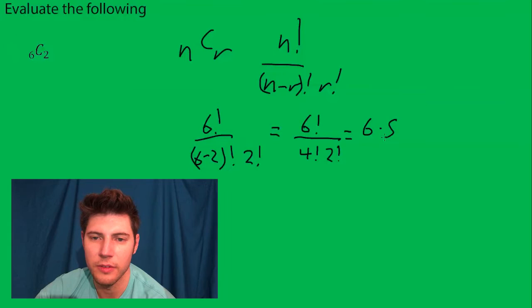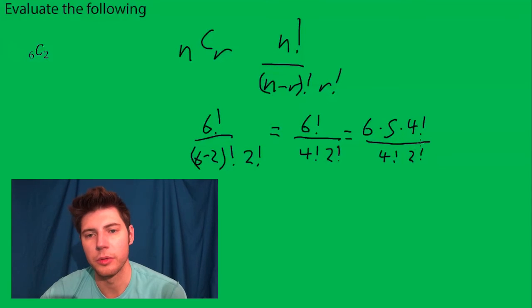Six times five times four factorial which is four times three times two times one divided by four factorial two factorial. The reason I didn't go all the way down four three two one is because these guys can cancel.